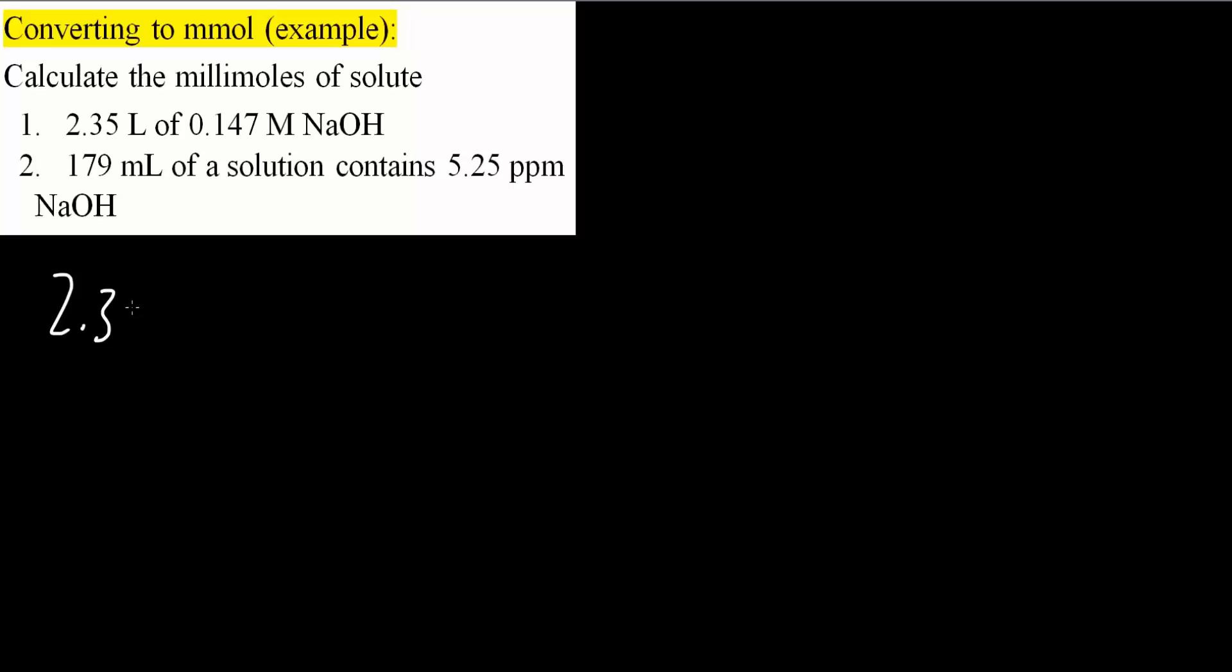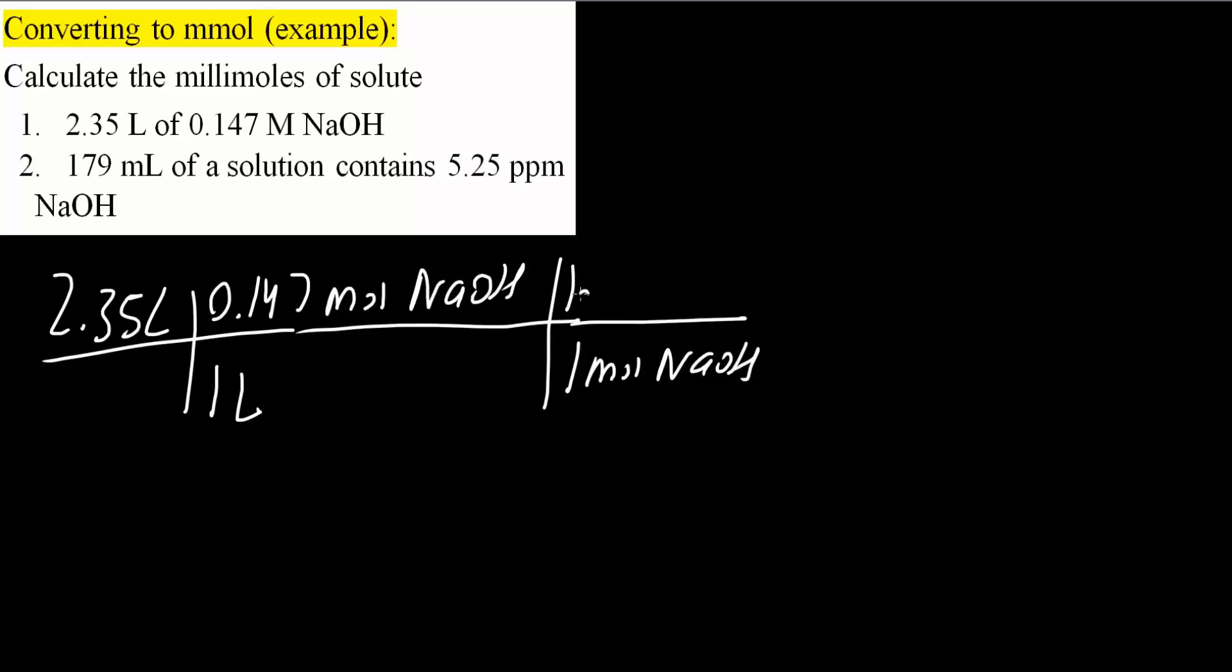So we have 2.35 liters. We know that one liter would contain 0.147 moles of NaOH. We know this because molarity is moles over liter. So moles of NaOH. From here, we will convert moles of NaOH into millimoles because we know that one mole of NaOH would contain 1,000 millimoles of NaOH.